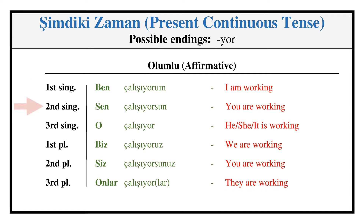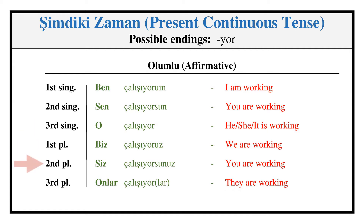Present Continuous — Affirmative: ÇALIŞIYORUM, ÇALIŞIYORSUN, ÇALIŞIYOR, ÇALIŞIYORUZ, ÇALIŞIYORSUNUZ, ÇALIŞIYORLAR.